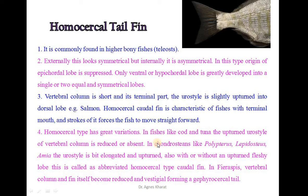The homocercal type has great variations. In fish like cod and tuna, the upturned urostyle of the vertebral column is reduced or absent. In chondrosteans like Polypterus, Lepisosteus, and Amia, the urostyle is a bit elongated and upturned, also with or without an upturned fleshy lobe. This is called the abbreviated homocercal type of tail fin.